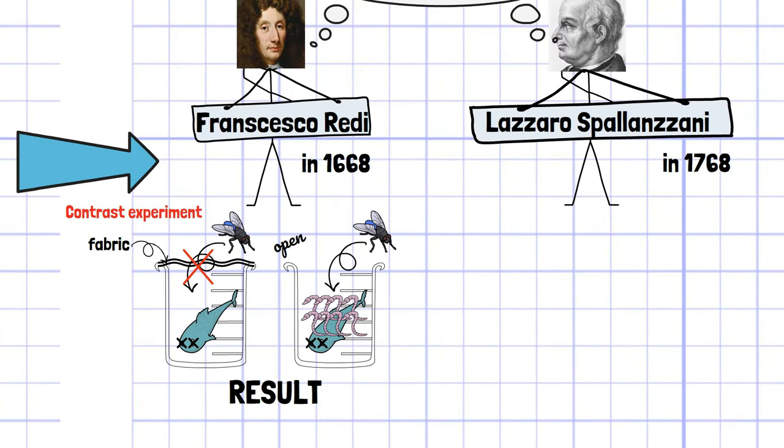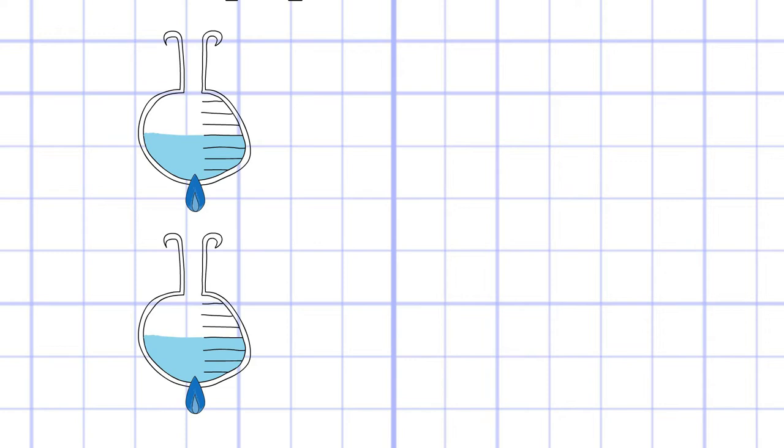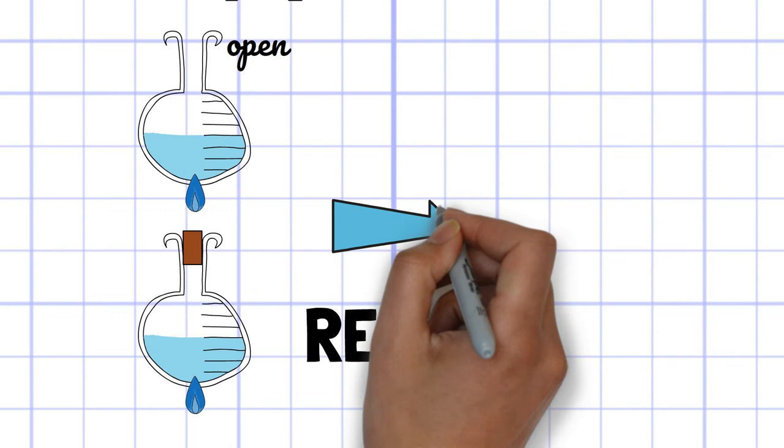Lazaro Spallanzani boiled soups in two different containers and sealed one of them to avoid involvement with outside and left another open to the air. As a result, nothing had emerged from the sealed container, but bacterial colony emerged from the open container.